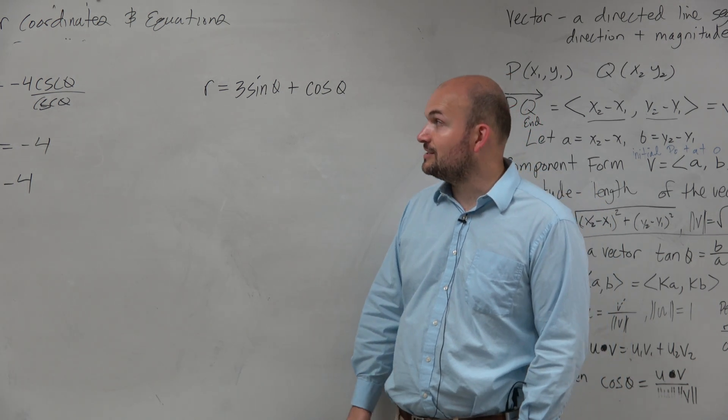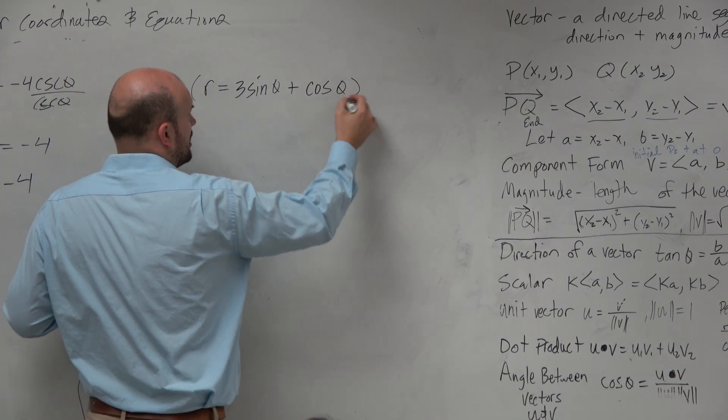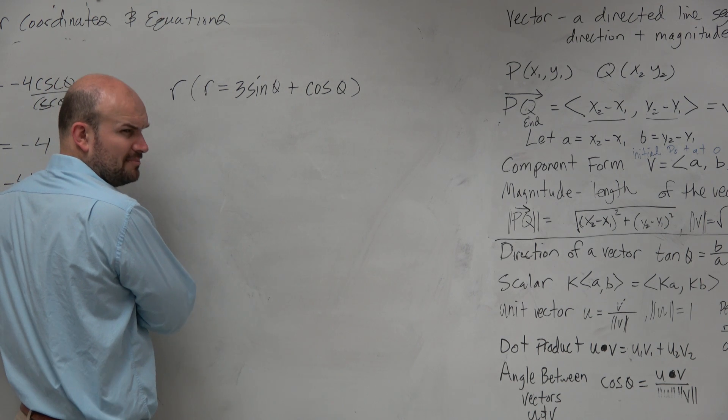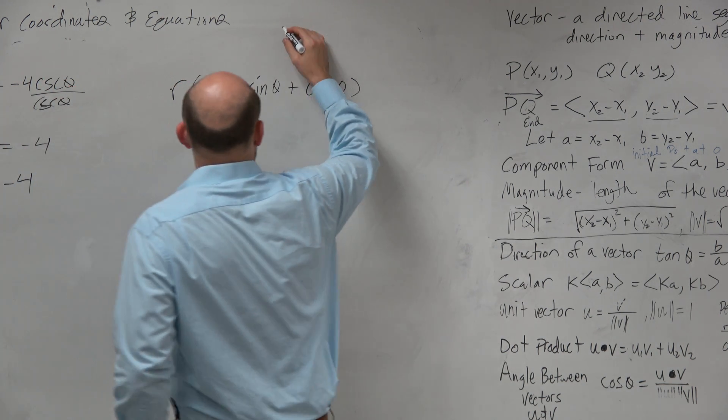So since we can't do that, or since we don't have that, we could multiply everything times r. And you say, say what? Can you do that? Is that possible? We can multiply numbers, but can we multiply variables? Well, I don't know. Let's think about this.